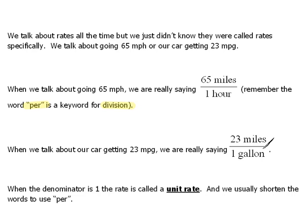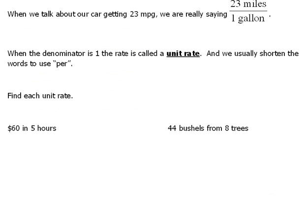When we say these things in our normal day-to-day vocabulary, we're always saying per hour, per gallon, per unit, per whatever. We're saying that our denominator is 1. That's something a little bit more special — it's not just a rate, but it's called a unit rate, because the denominator is always 1 in a unit rate. And instead of saying 23 miles in one gallon, or per one gallon, we just shorten it to say 23 miles per gallon.